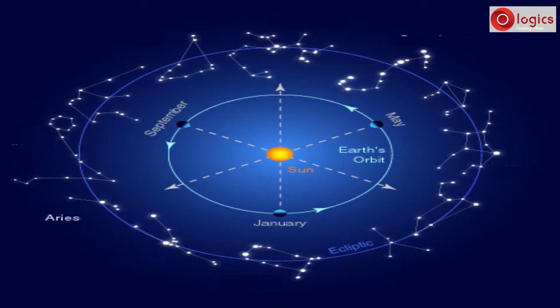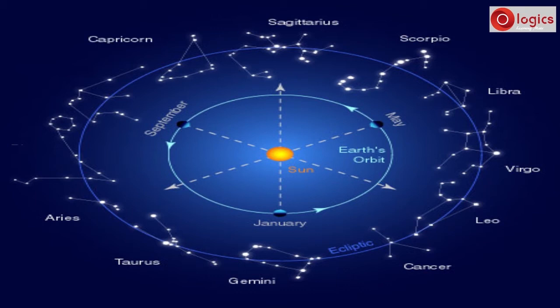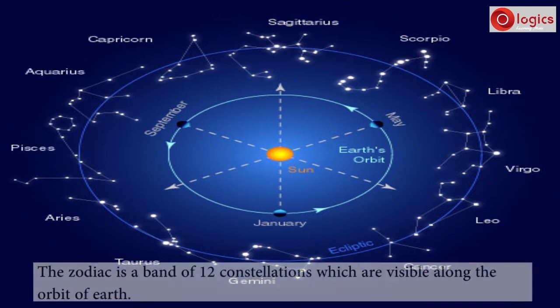They are Aries, Taurus, Gemini, Cancer, Leo, Virgo, Libra, Scorpius, Sagittarius, Capricorn, Aquarius, and Pisces. This band of 12 constellations is called the Zodiac.